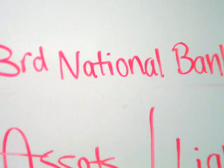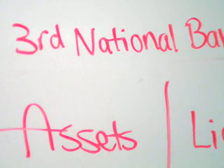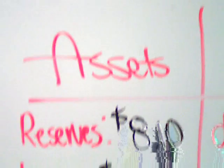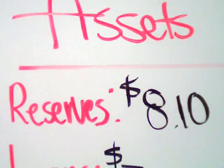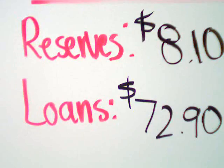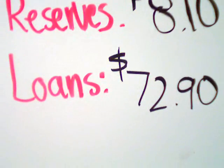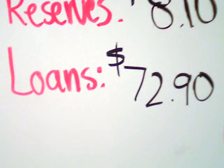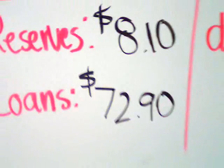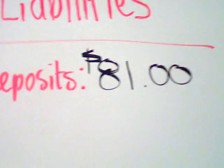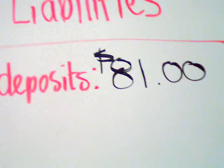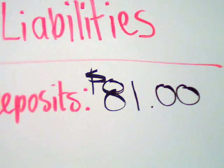Third National Bank has to keep 10% of their money in reserve, which would be $8.10. They can loan out $72.90, but their total deposit — what they're liable for in the end — is $81.